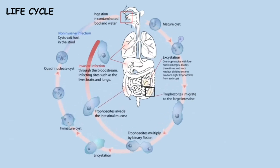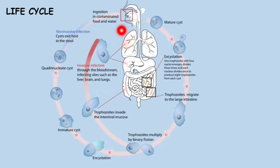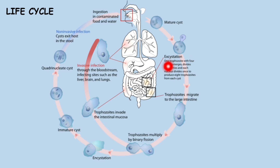Now let's talk about the life cycle of Entamoeba histolytica. There is ingestion of the mature cysts via the fecal-oral route, either by drinking contaminated water or eating contaminated food. You can see the mature cysts with four nuclei. The first process is called excystation — conversion from the cyst to trophozoite. One trophozoite with four nuclei emerges and divides three times, with each nucleus dividing once, to produce eight trophozoites from each cyst.